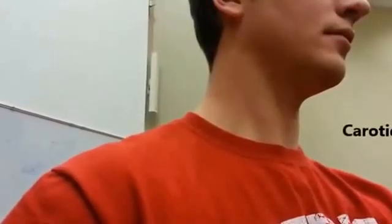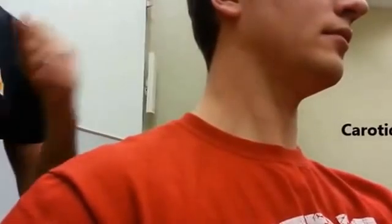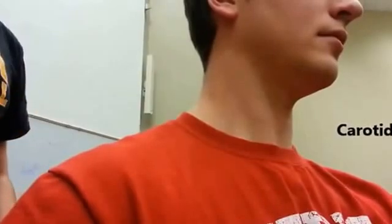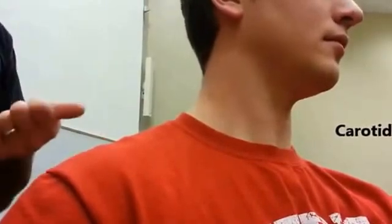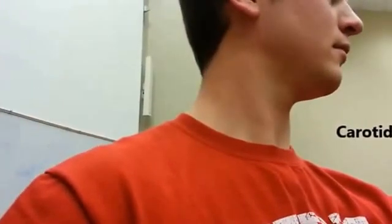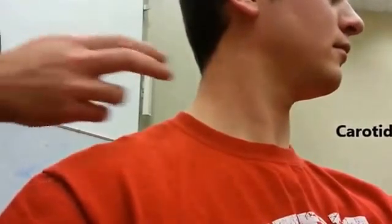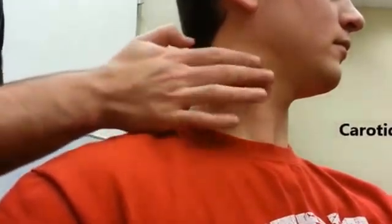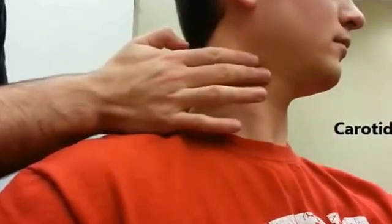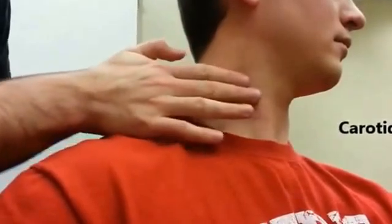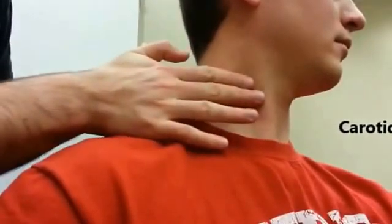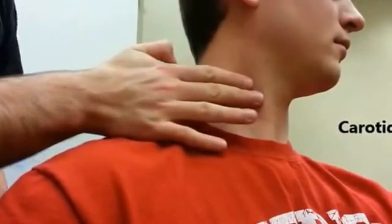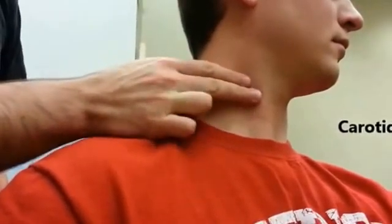To find the carotid pulse, I'm going to ask the patient to look away from the side that I'm going to be testing — so in this case, the patient looks to their left — and I'll test for the right carotid. I'll be placing my fingers next to the sternocleidomastoid and feeling for the pulse.